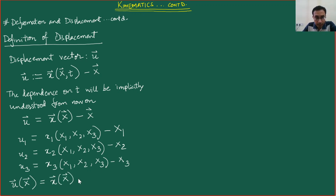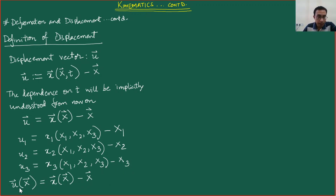So what we can say is that u is actually a function of X. With reference to our previous diagrams, this displacement vector u is actually the displacement vector of the position of the point P.